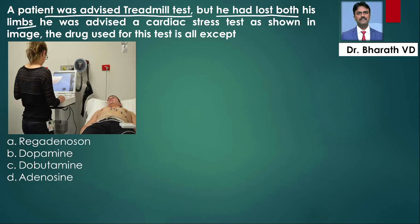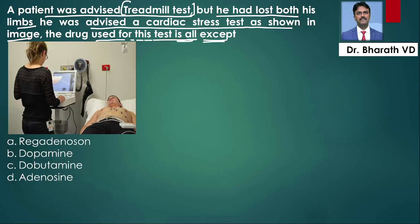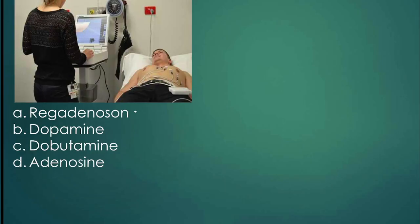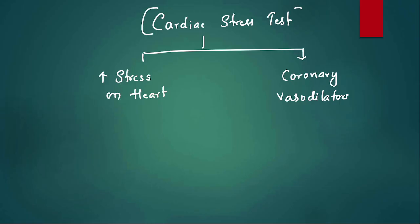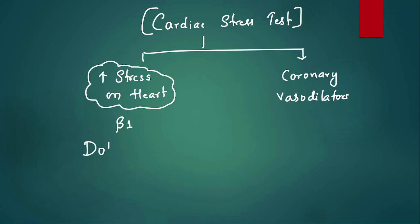Fourth question: a patient was advised a treadmill test but had lost both limbs, so a pharmacological cardiac stress test was done instead. The drug used for this test — all except which? The options are regadenoson, adenosine, dopamine, dobutamine. To perform cardiac stress testing, we increase stress on the heart using drugs and observe its reaction. Dobutamine stimulates beta-1 receptors.